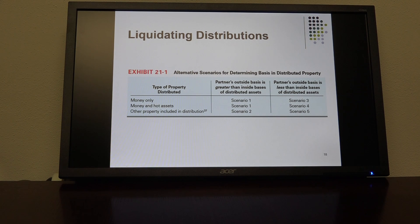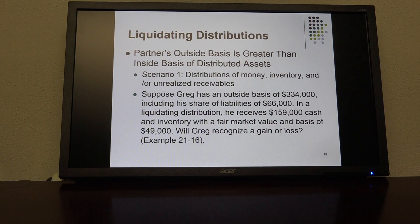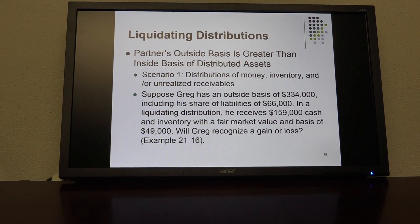Here are the scenarios. Scenario one was the loss situation and scenario three was the gain situation. Here is an example of scenario one: the partner's outside basis is greater than the partner's inside basis. You have scenario one where there are distributions of money, inventory, and/or unrealized receivables — also known as hot assets. In this situation, Greg has an outside basis of $334,000 but has a share of liabilities of $66,000. In a liquidating distribution, he receives $159,000 cash and inventory with a fair market value of $49,000.